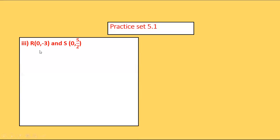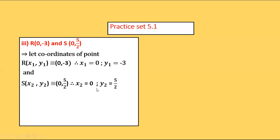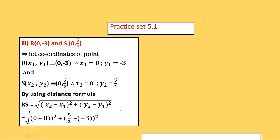To find the distance between point R and S: coordinate of point R is (0, −3) and coordinate of S is (0, 5/2). Let R be x1, y1 and S be x2, y2. Therefore x1 = 0, y1 = −3, x2 = 0, y2 = 5/2. By using the distance formula, RS = √[(0−0)² + (5/2−(−3))²].